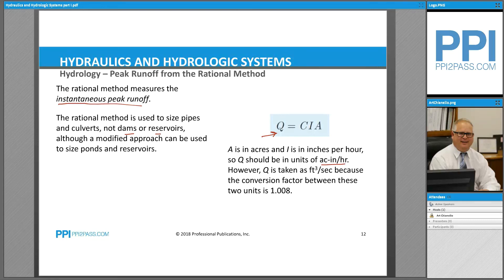...which is a more common use of units for volumetric flow rate, the conversion factor is 1.008. So we can say then that one acre-inch per hour is equal to one cubic foot per second.